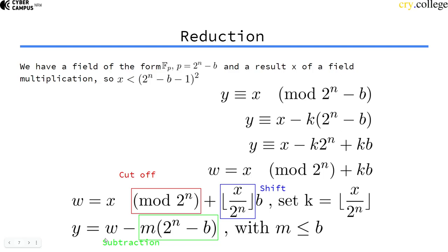So instead of doing a costly reduction, we just need to cutoff, shift and subtract, which are all very cheap operations.